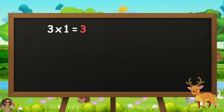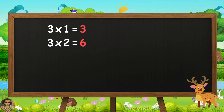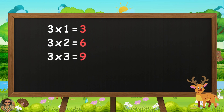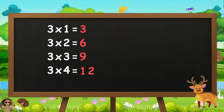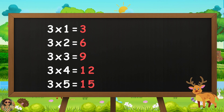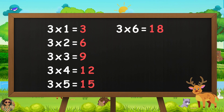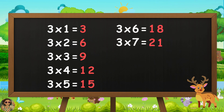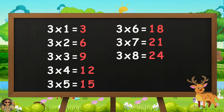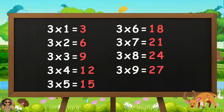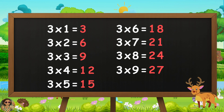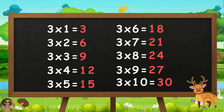3 times 1 is 3. 3 times 2 is 6. 3 times 3 is 9. 3 times 4 is 12. 3 times 5 is 15. 3 times 6 is 18. 3 times 7 is 21. 3 times 8 is 24. 3 times 9 is 27. 3 times 10 is 30.